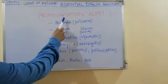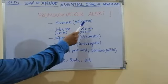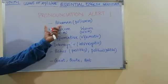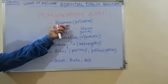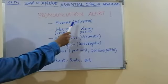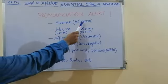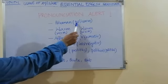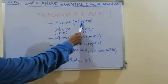Let's learn the pronunciation of some basic words — pronunciation alert. This word we often mispronounce as 'police', but the word is 'policeman'. The correct pronunciation is 'policeman'. This notation is IPA — International Phonetic Alphabet.